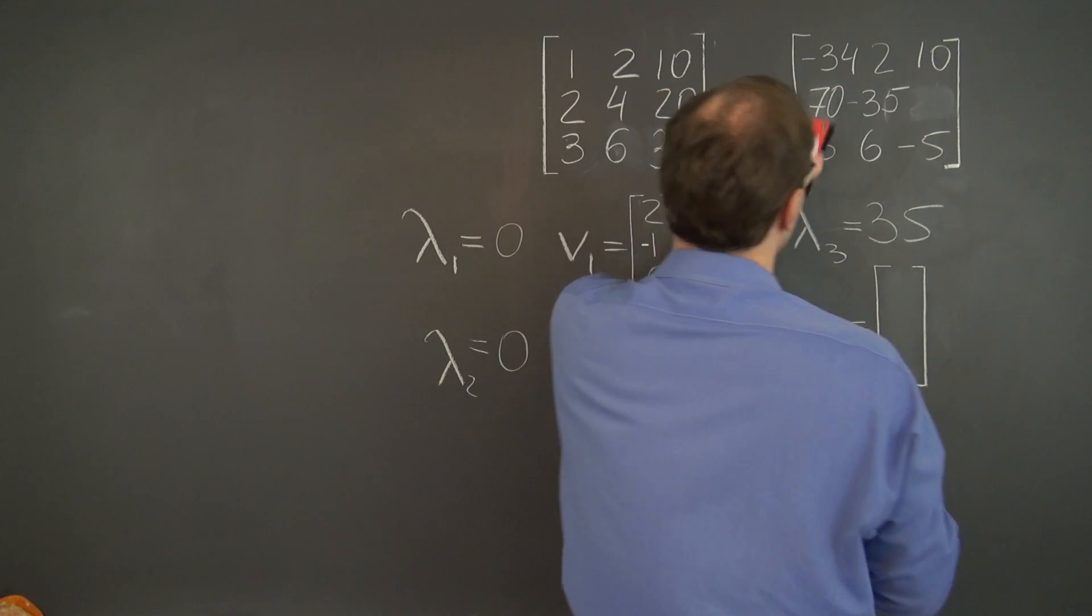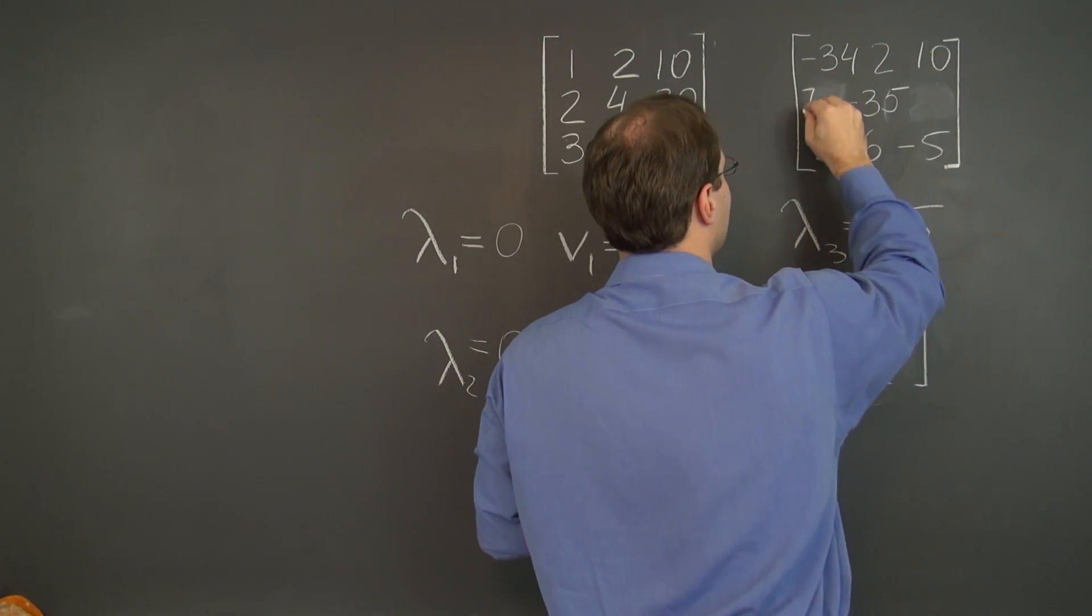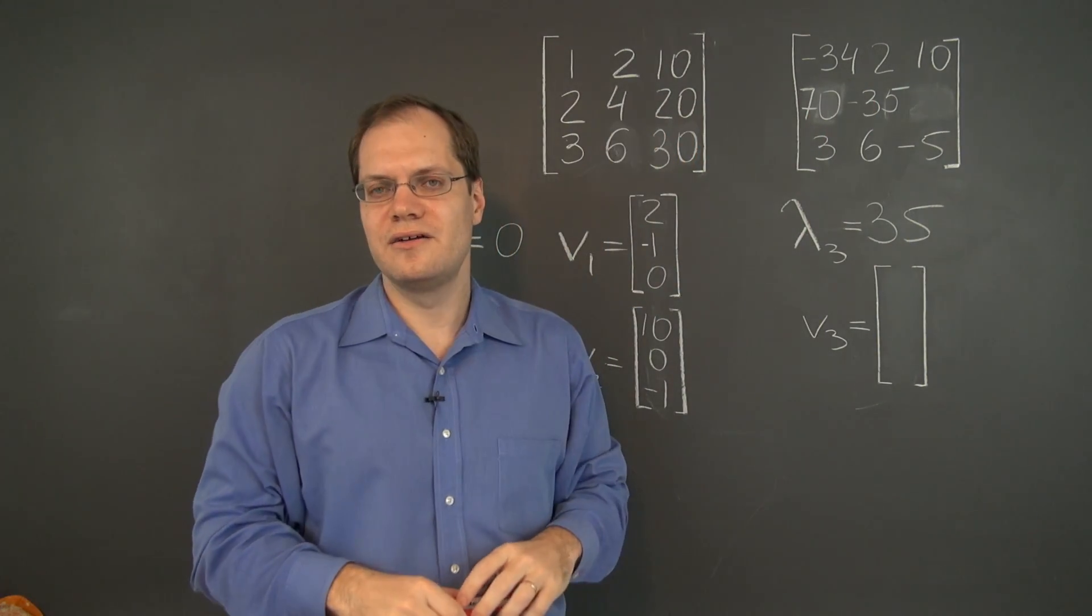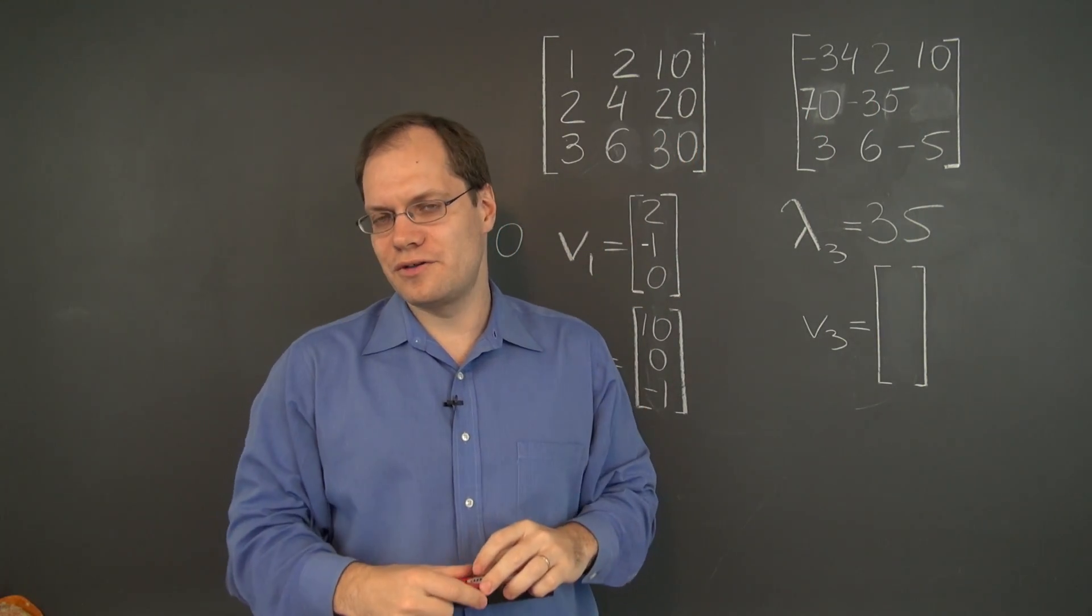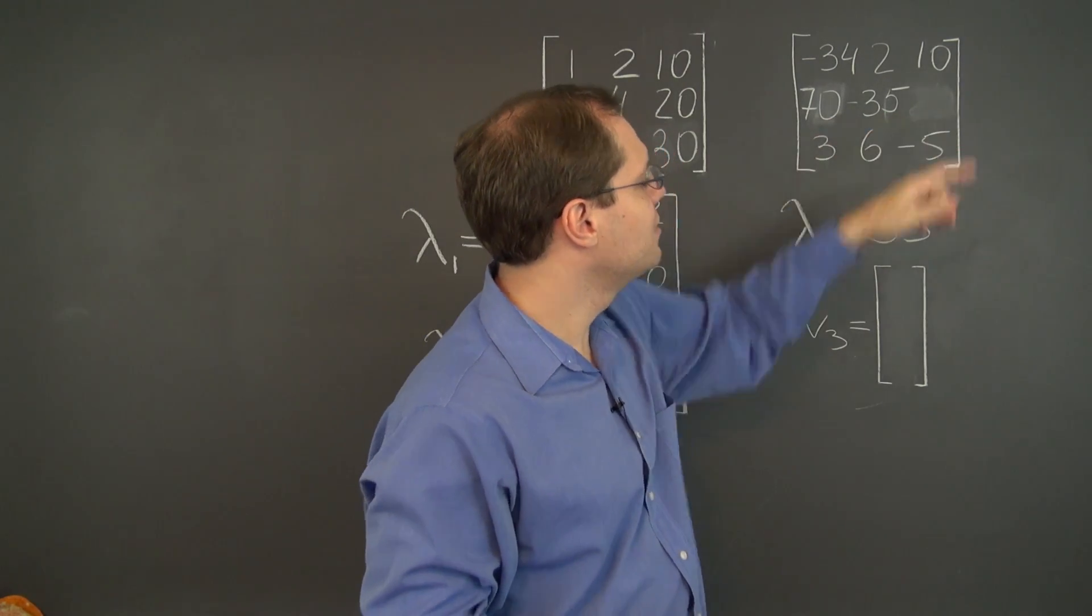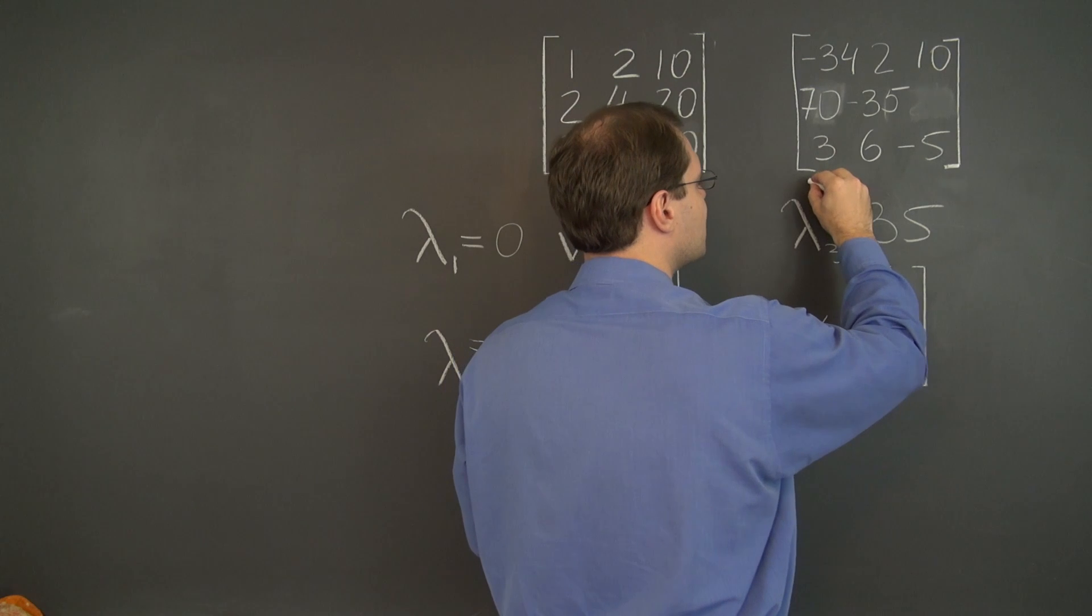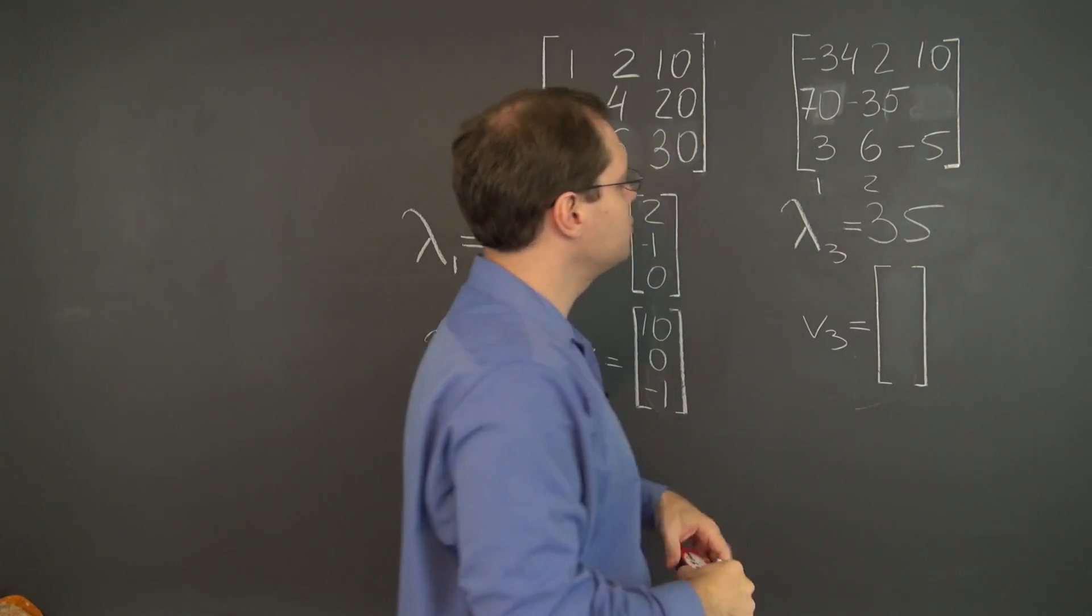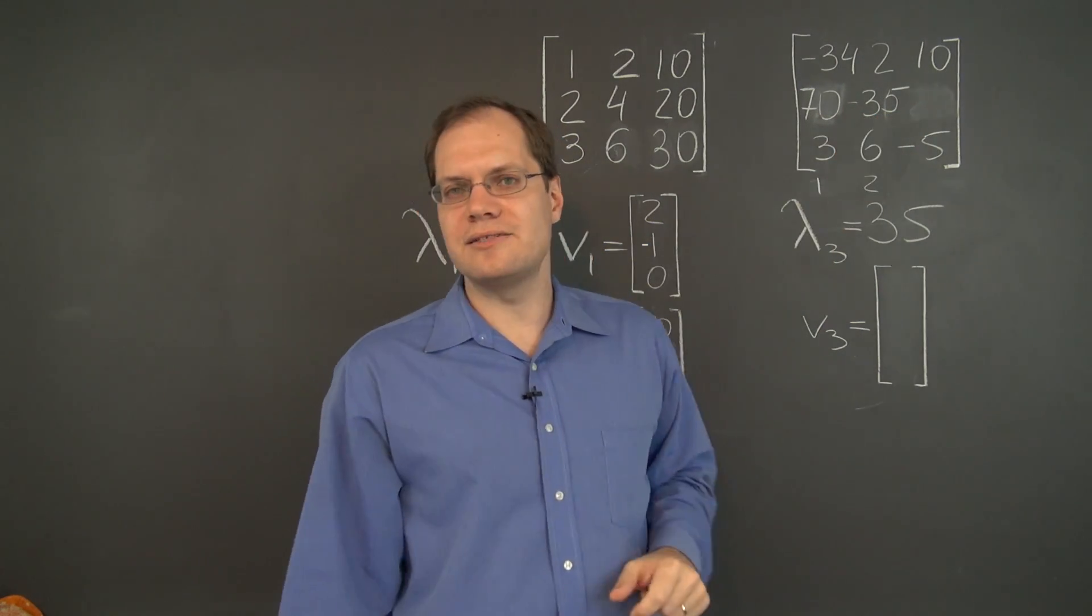So if you have enough experience, and you trust that you found the eigenvalue correctly, you actually don't need to go any further, believe it or not. Because I can tell just from this row that the first two columns need to come in proportion 1, 2, so that the 70 can cancel the 35.